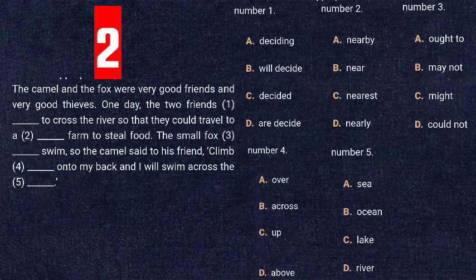For blank number two — 'they could travel to a [blank] farm to steal food' — it should indicate a farm very close to them. The option 'nearby' is an adjective meaning very close, so option A, 'nearby,' is correct. For blank number three — 'the small fox [blank] swim' — since the passage is in past tense, 'couldn't' (past form of 'can') is the correct answer, option D.